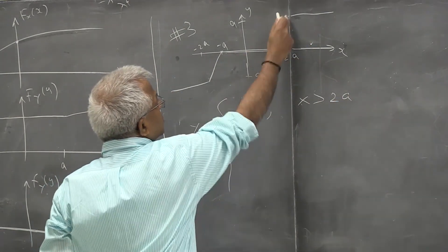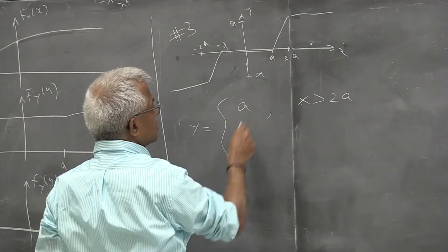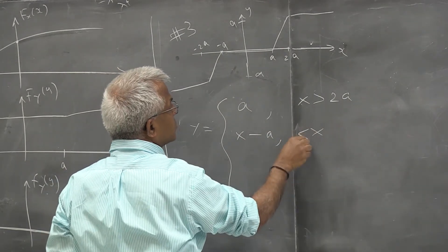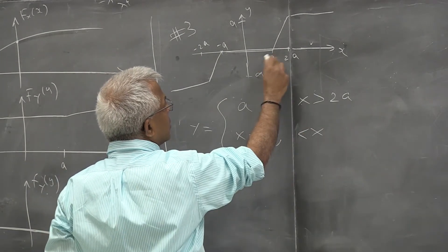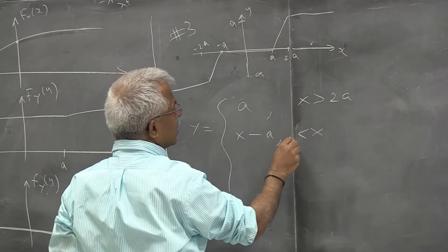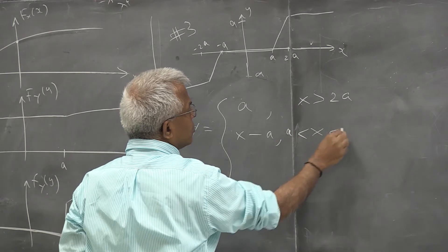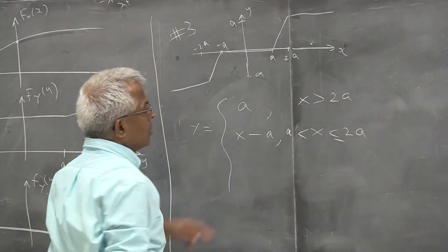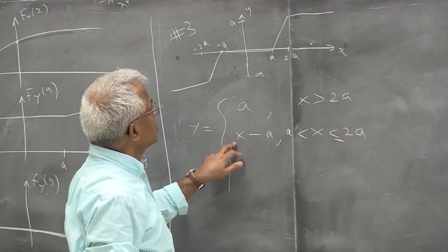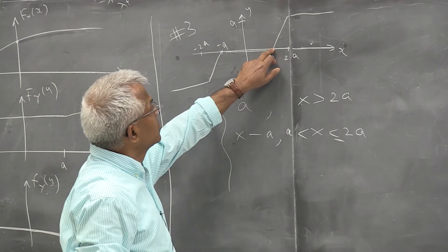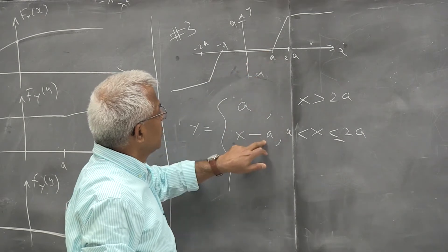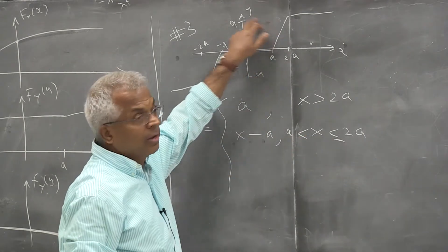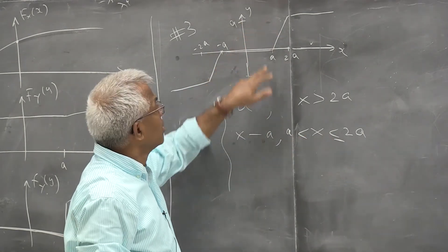And then y is a straight line, so y is actually x minus a if x is between a and 2a, because when x equals a you get zero, and when x equals 2a you get a. So it's a 45-degree line.